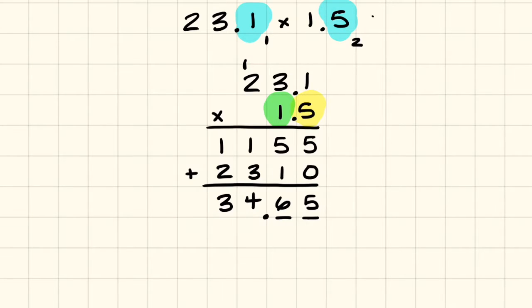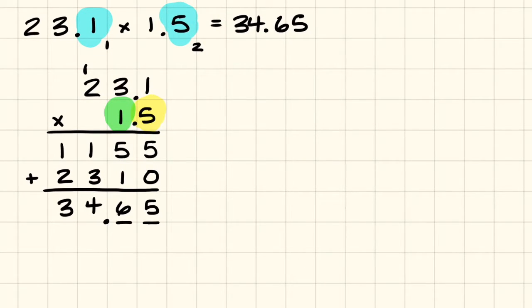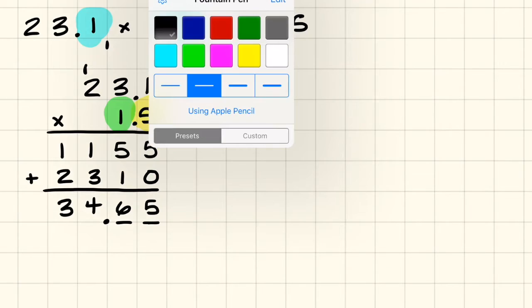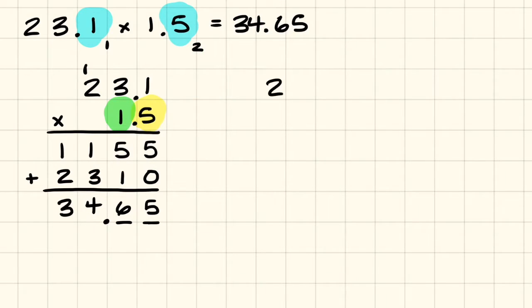Therefore my answer becomes 34 and 65 hundredths. Now, why am I moving the decimal and placing it where I placed it? Let me show you so that you can gain a little bit of an understanding of what that's looking like. So I'm going to move this over. And I want to talk about what I really did, because that original partial product was essentially 231 times 15. And then from there I did some work on the final product of that number.